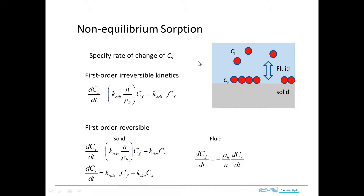Non-equilibrium sorption is an important process for remediation and a variety of chemical processes. The basic conceptual model has a fluid with molecules at concentration cf, and sorbed molecules on the solid. Before, we said that at equilibrium there was a relationship between concentration on the solid and in the fluid, but now we're saying there's a relationship between the rates of change — and this sounds like a kinetic expression, as we saw a few weeks ago.